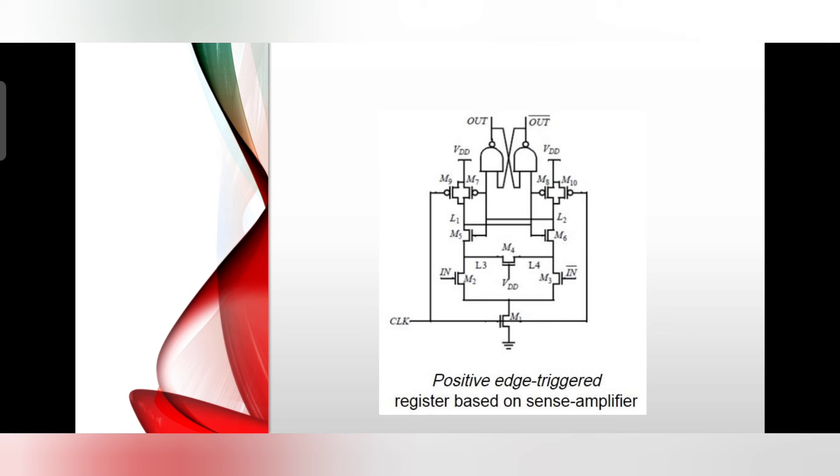The shorting transistor M4 is used to provide a DC leakage path from either node L3 or L4 to ground.